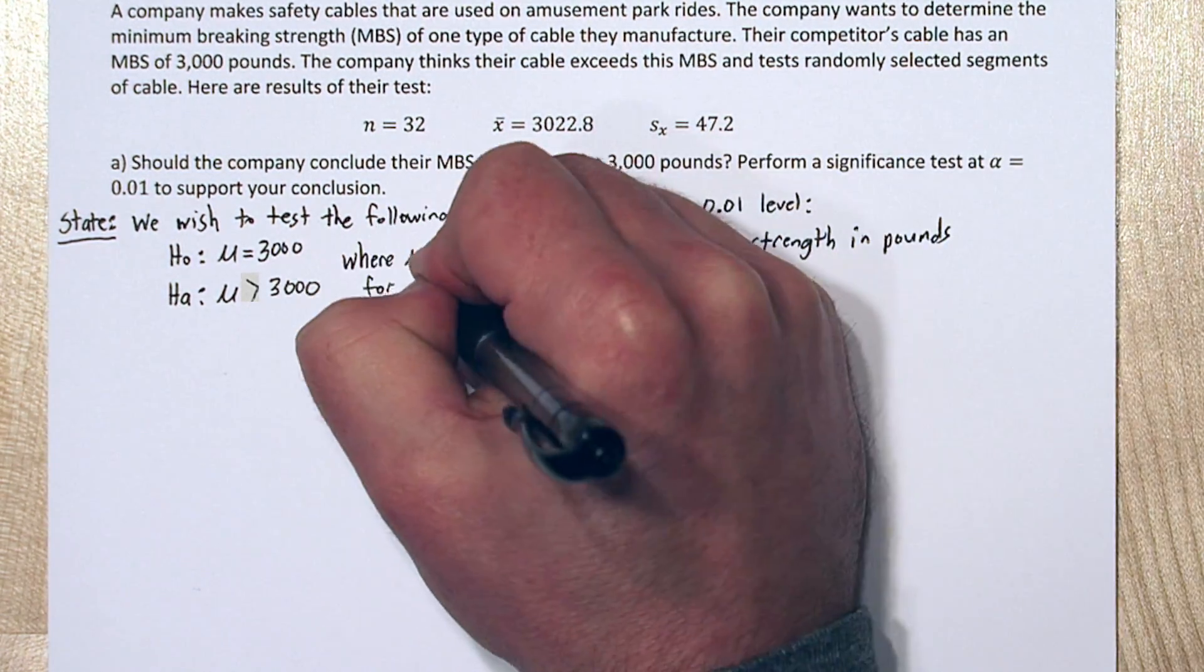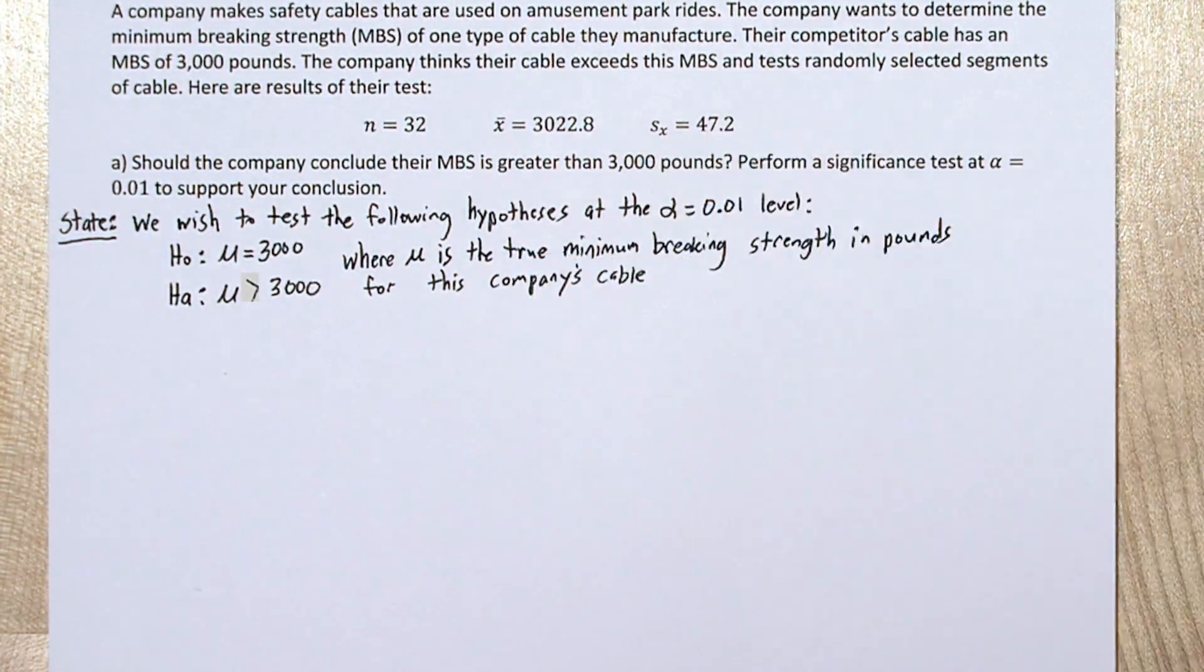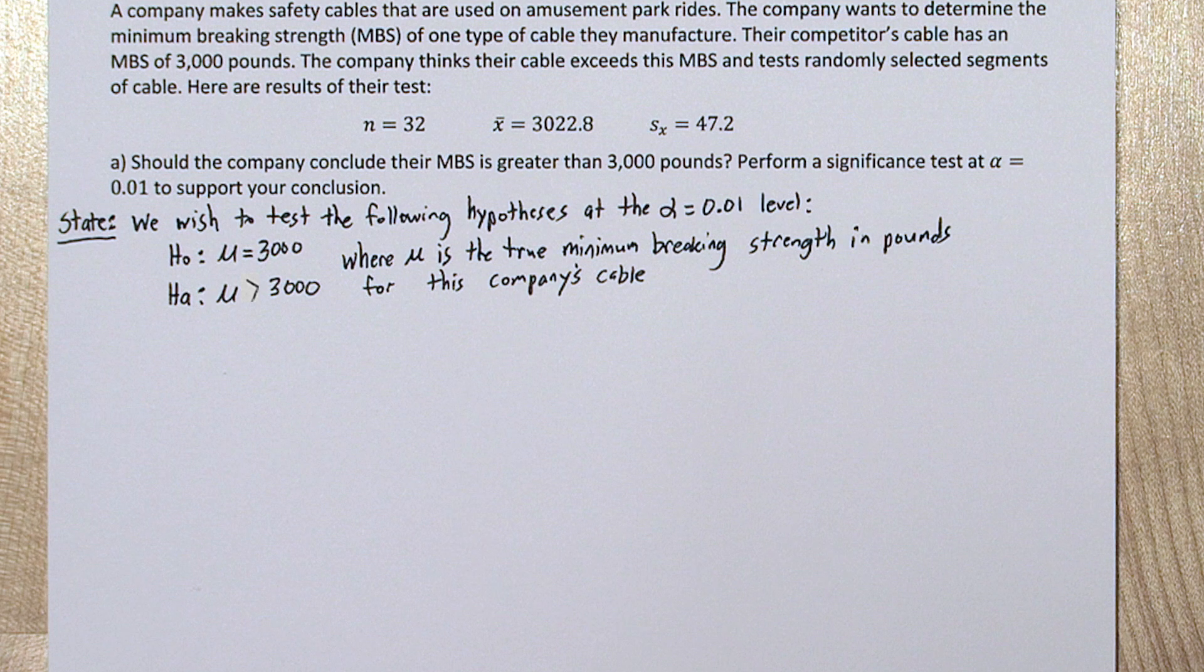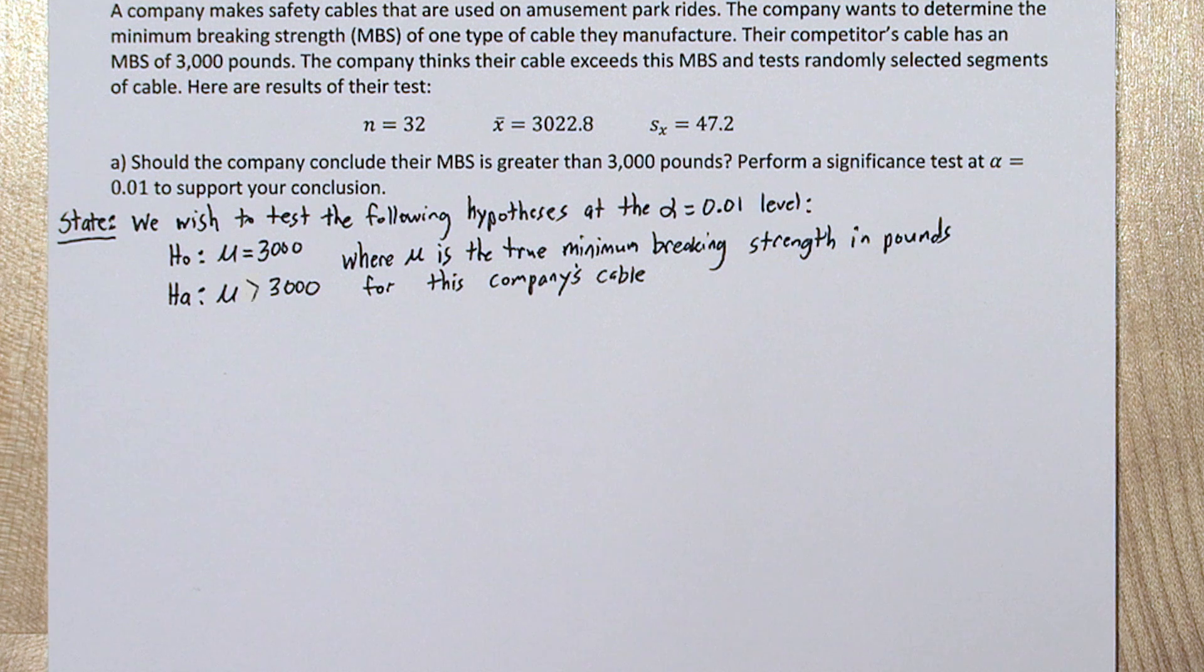Where mu is the true minimum breaking strength in pounds for this company's cable. So we have three things in our state step: our significance level which is alpha equals .01, our hypotheses, and we've defined our parameter mu.